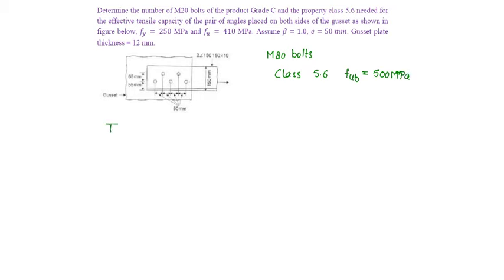Tensile capacity of bolt considering gross section yielding criteria will be Ag into Fy by gamma M0, where Ag is gross area of the section. Each angle section has an area of 2903 mm square. So there are two angles, so 2 into 2903 into Fy is 250 by gamma M0 is 1.1, so that will be equal to 1319.545 kilonewtons.